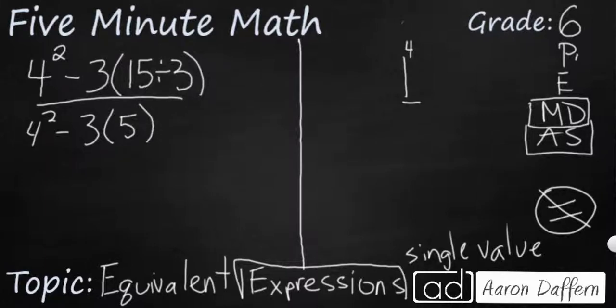Next we are going to look at this exponent. Even though we still have a parenthesis, 3 parenthesis 5, that really is just going to signify multiplication. So let's deal with this exponent next. 4 squared. And so 4 squared is going to make 16 because that is 4 times 4. Minus 3, I am going to just rewrite this as times 5.